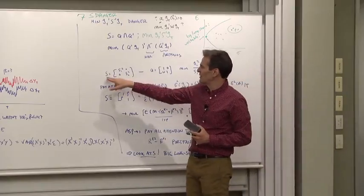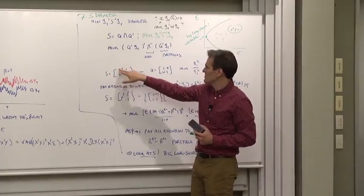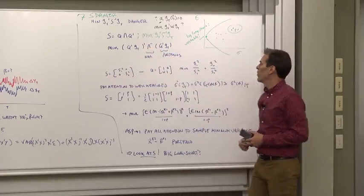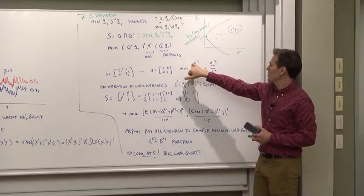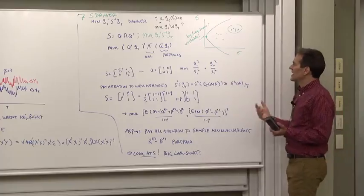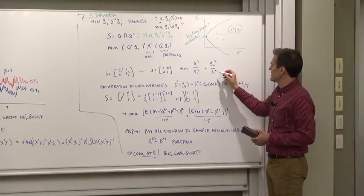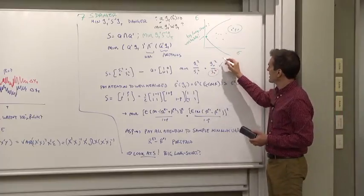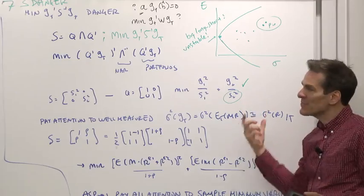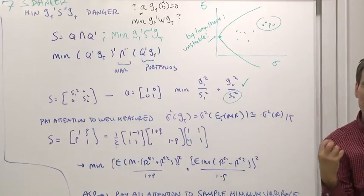Let's look at two examples. The simple one: suppose the S matrix just has diagonals in it. Then this Q is just one, so our minimization is minimize moment one squared over S one, moment two squared over S two. GMM pays a lot of attention to the well-measured moment, which is the same thing as the moment with very low variance, because things with low variance are well measured.